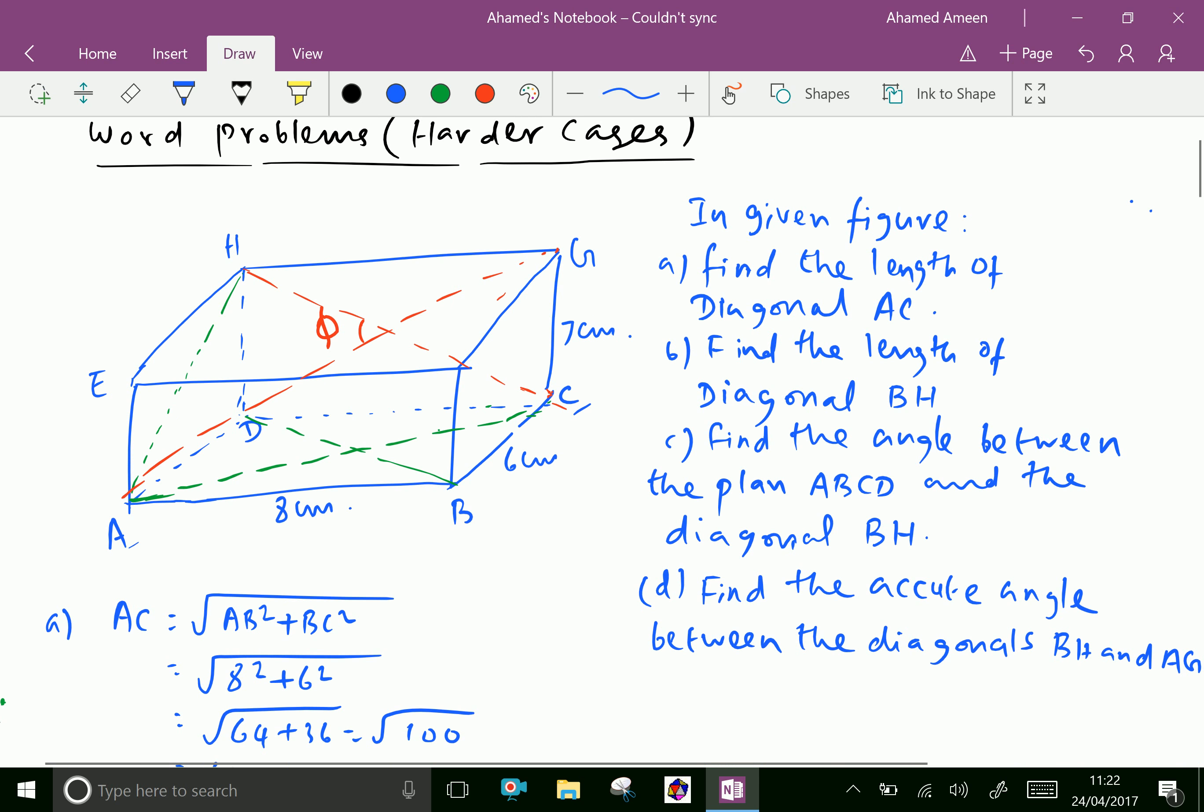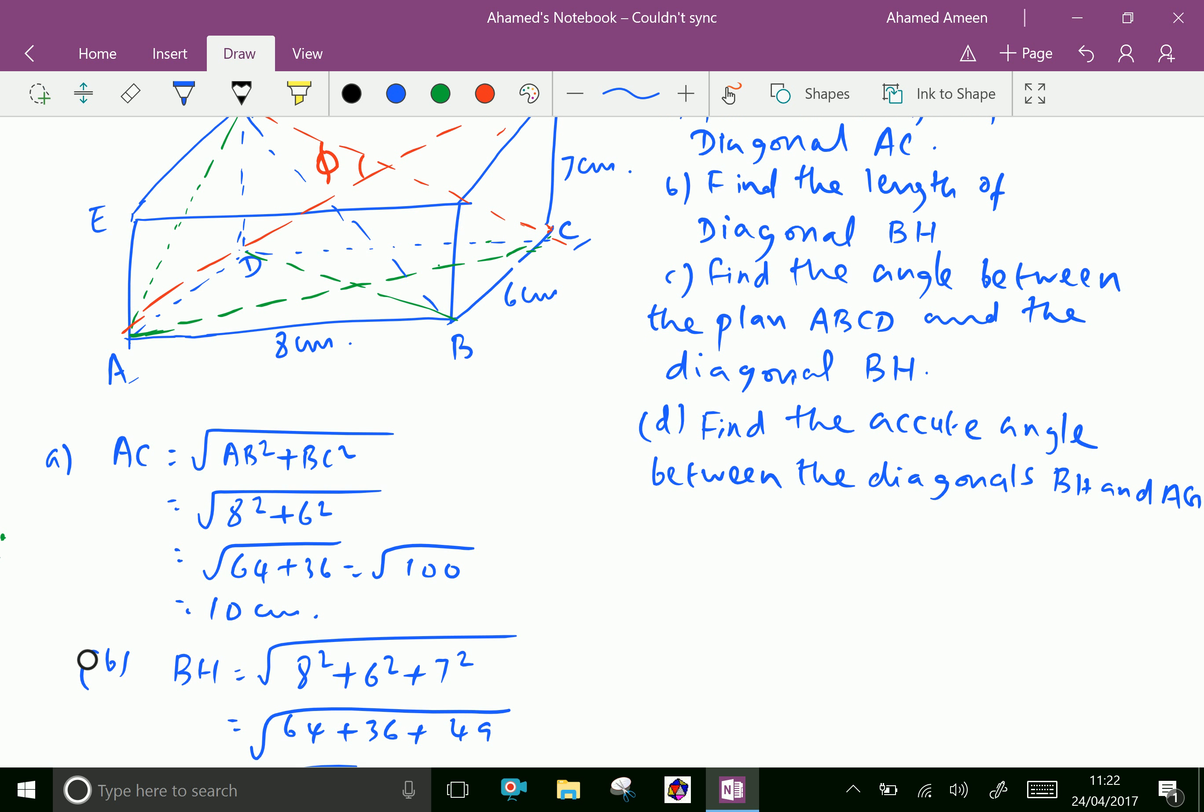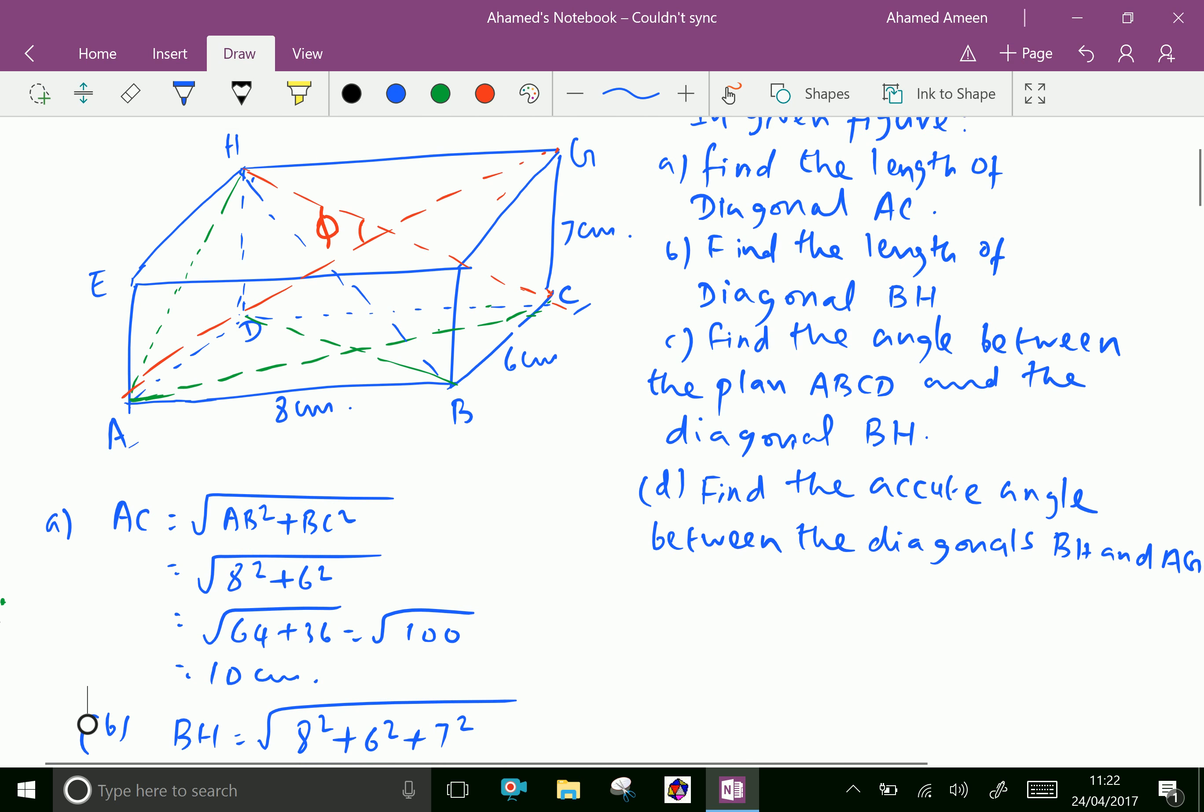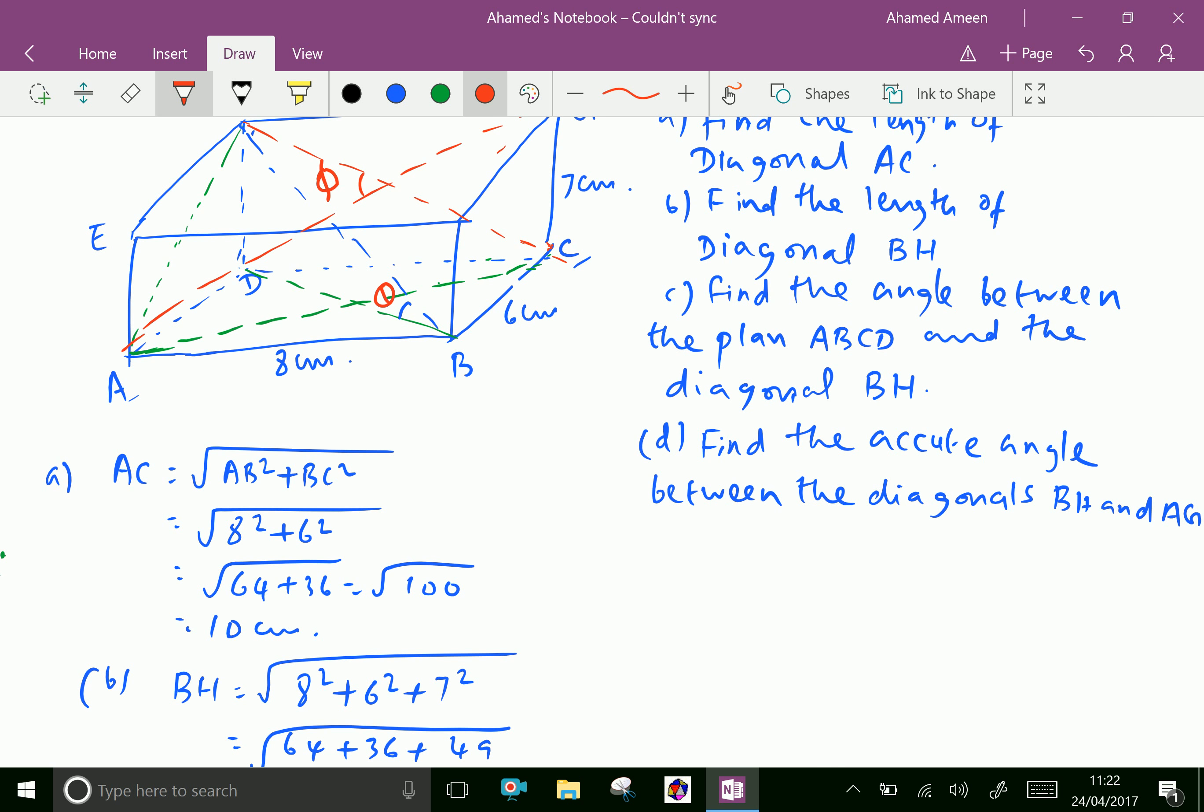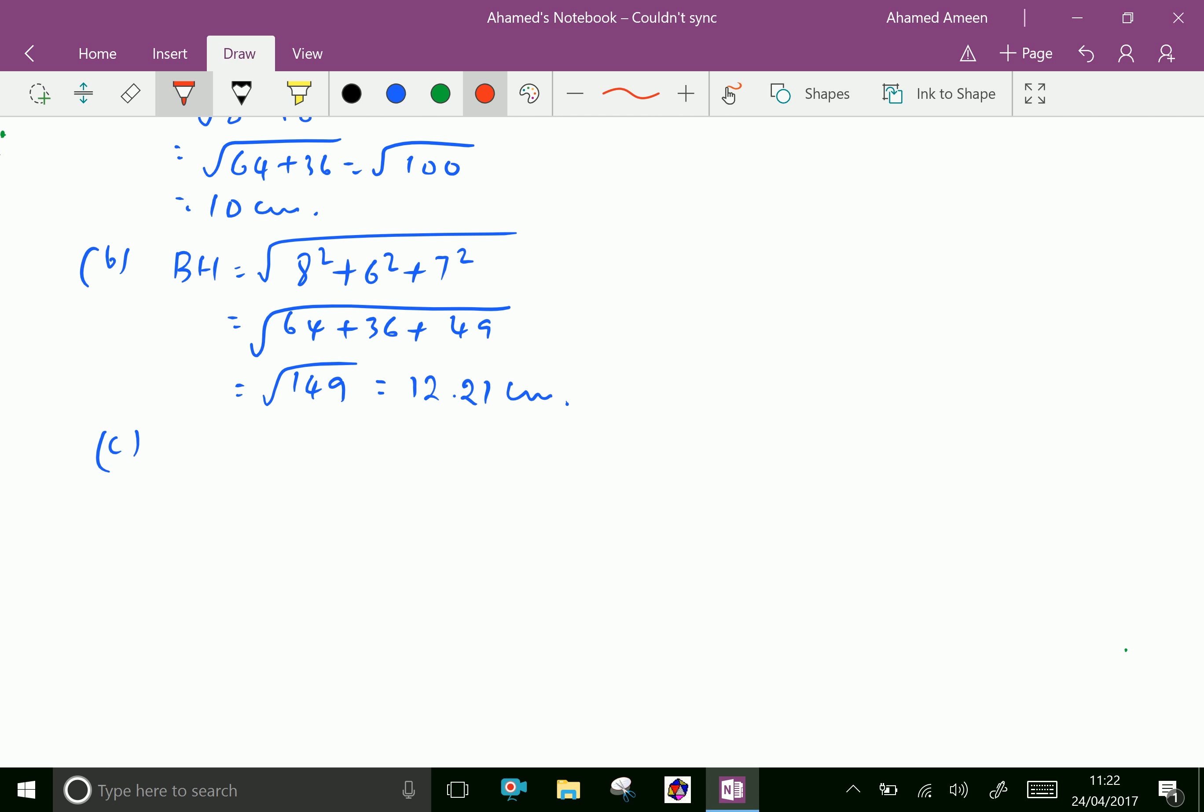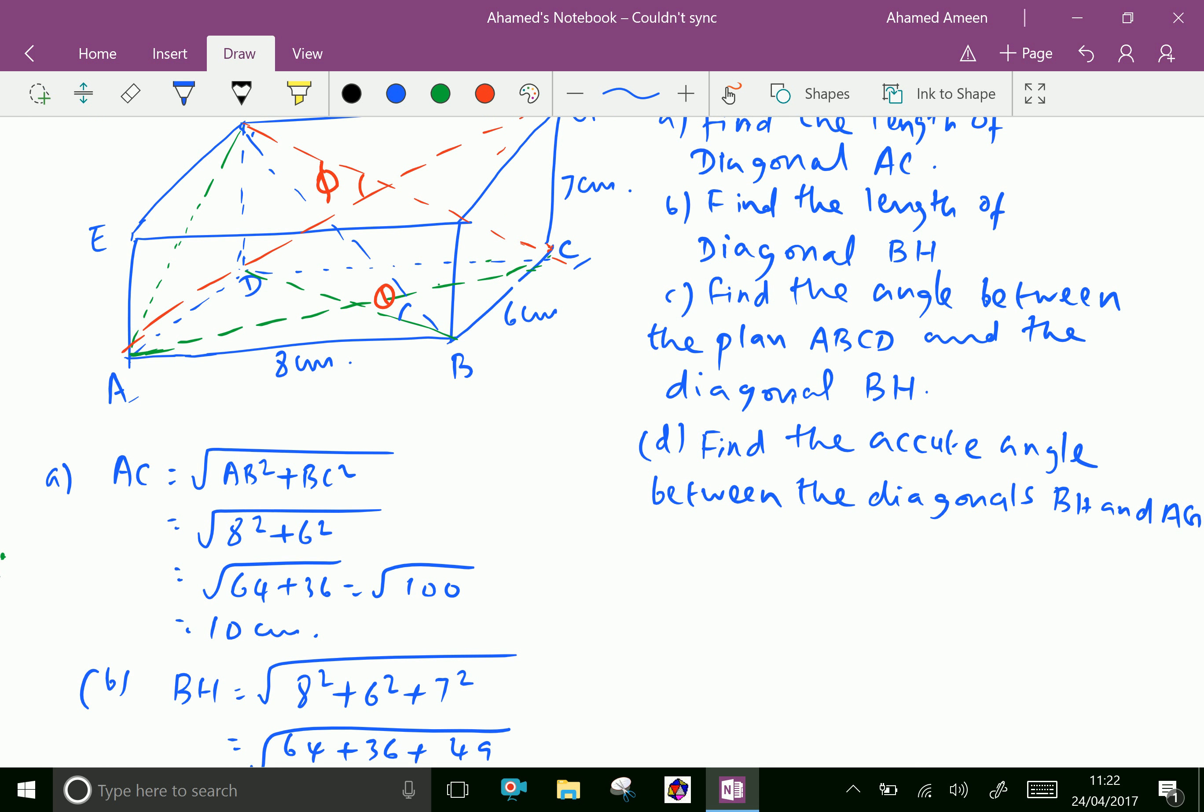Now join BH. The angle between the plane ABCD and BH, let it be theta. Now sine theta equals opposite over hypotenuse.